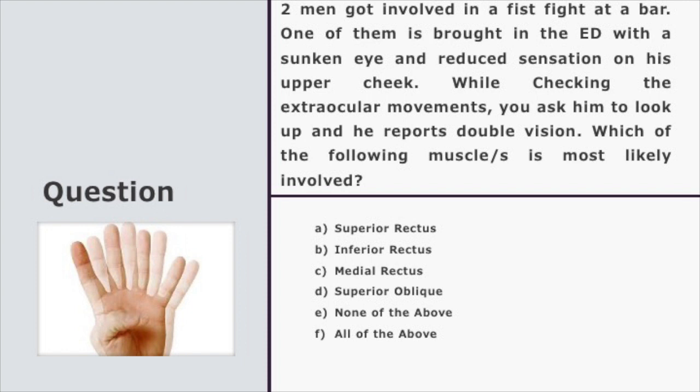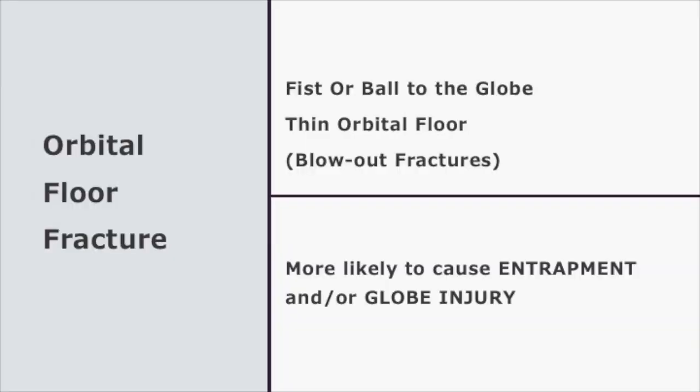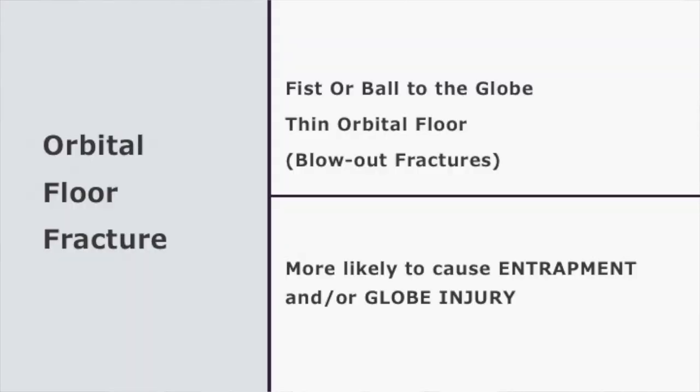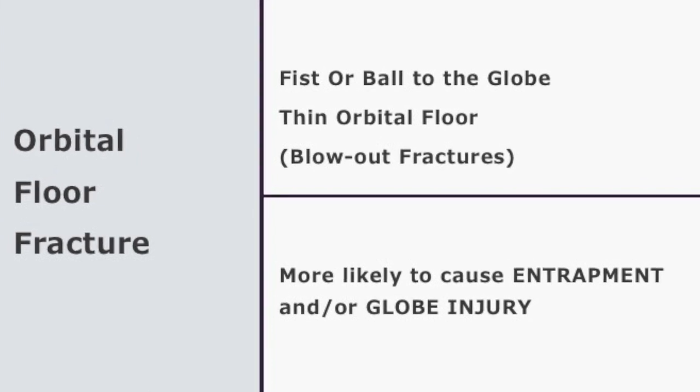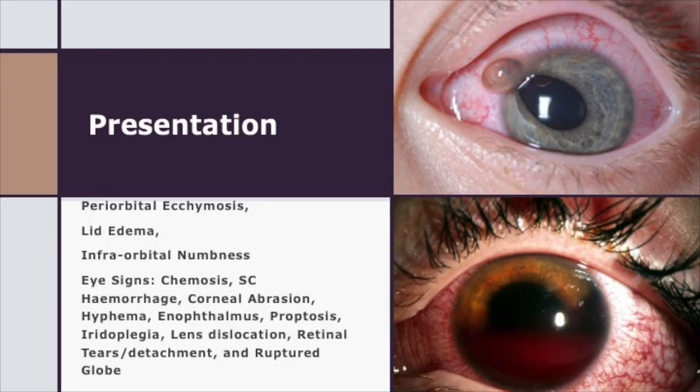Let us talk about orbital floor fractures. Usually these patients will come with injury from a fist fight, a ball hit to the globe, or any kind of blunt trauma to the eye. The inferior part of the orbit is the most fragile and that is where it tends to break. Whenever you are looking at an orbital floor fracture, think of two conditions: is there any entrapment of the muscle, or is there a globe injury? These patients will present with periorbital ecchymosis, lid swelling, or infraorbital numbness. In the scenario, it was a fist fight and the patient had a sunken eye with loss of sensation at the upper cheek — so we were talking about an orbital floor fracture.